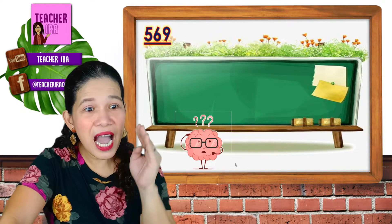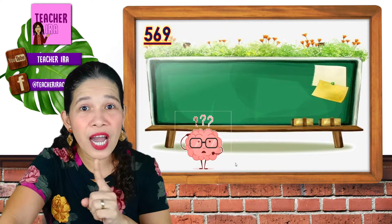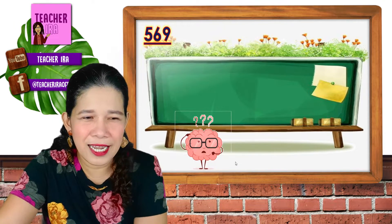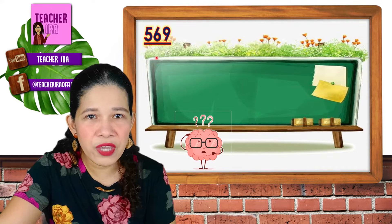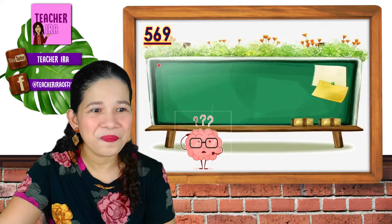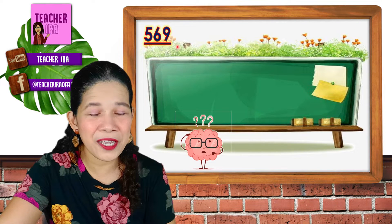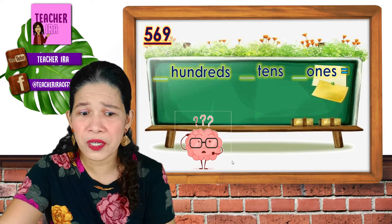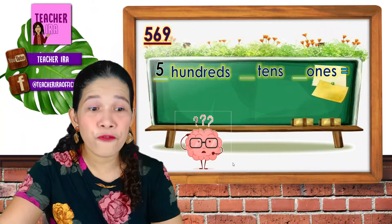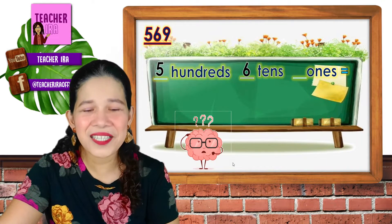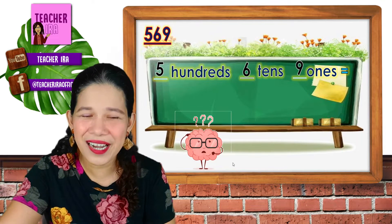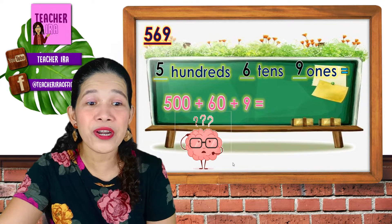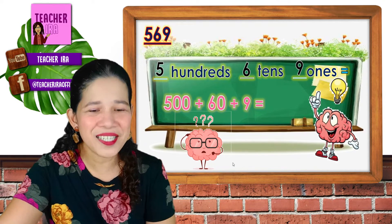This time, I will put the number and let's find out how many 100s, 10s, and 1s are there. How do you read this number? 569. Correct! So how many 100s, 10s, and 1s? That's 500s, 6 tens, and 9 ones. Yes — that's 500 plus 60 plus 9, and the number is 569.